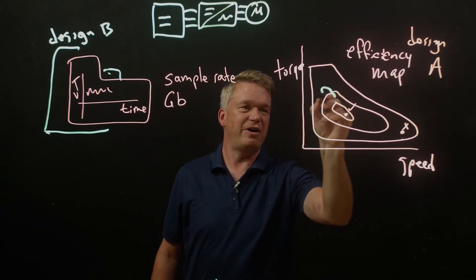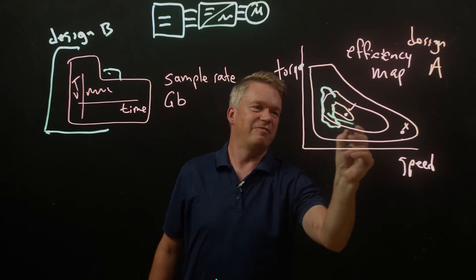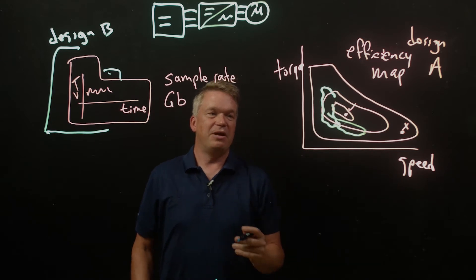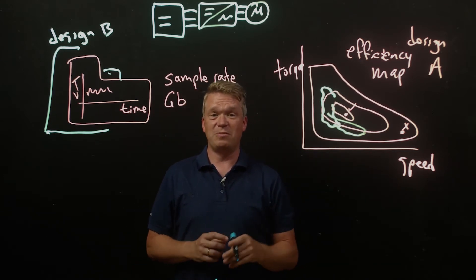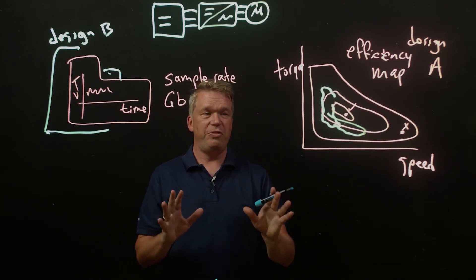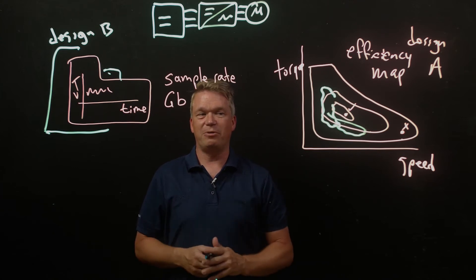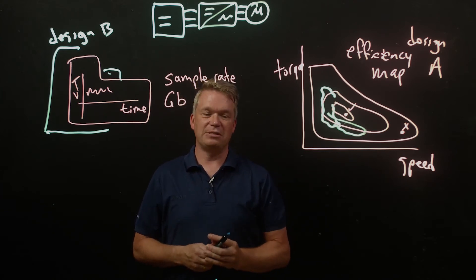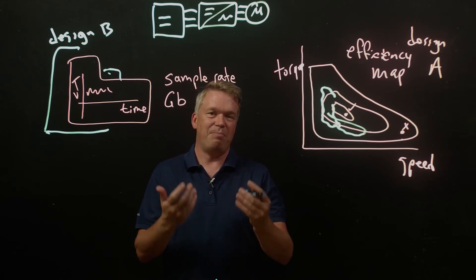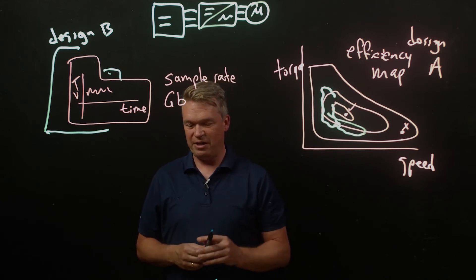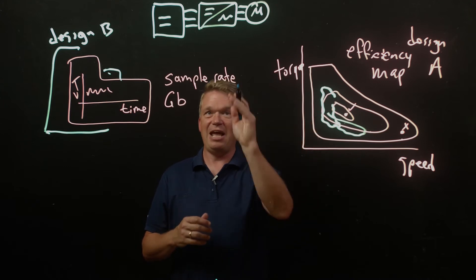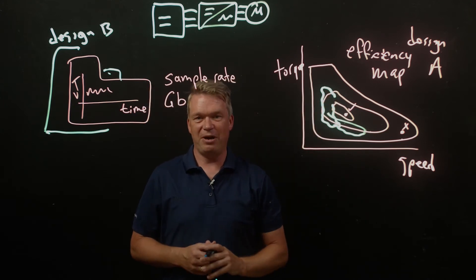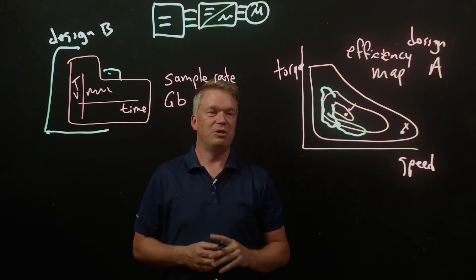We may find that it's got a little different kind of island shape here because we have a different control algorithm or different hardware or something like that. But the really cool thing now is we can start to make these quantifiable comparisons. How will this impact the customer's performance expectation and how it will impact their range? We can quantify that. So that's our design A versus our design B comparison that we can bring to the table.